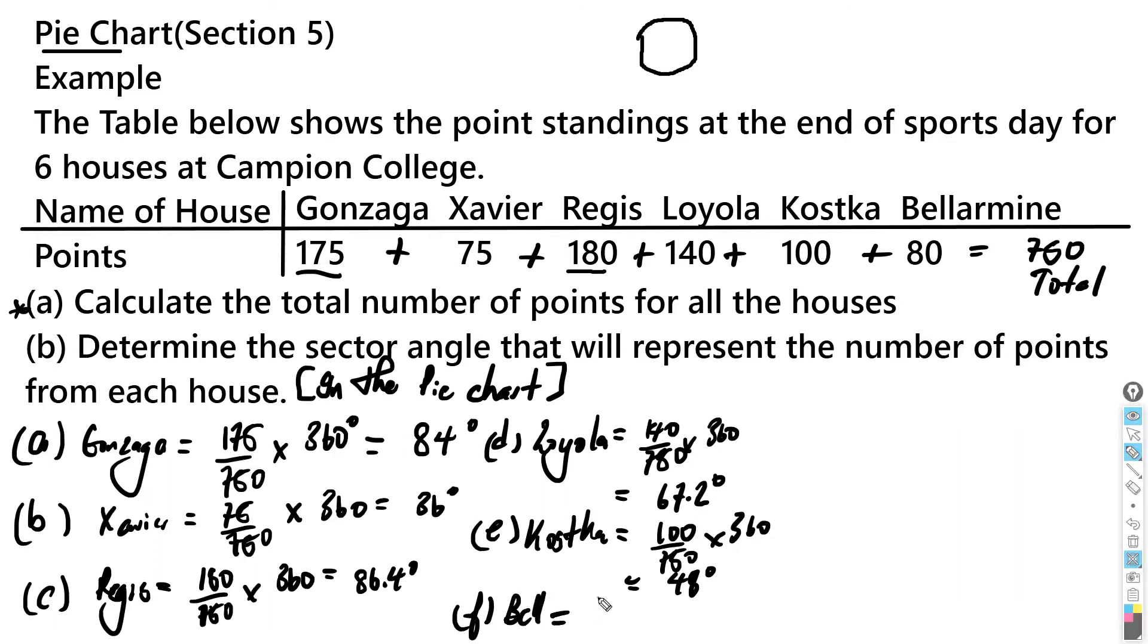And the last one, F, is actually for Bellarmine, which is actually 80 over 750 multiplied by 360. This would actually end up being 38.40 degrees.